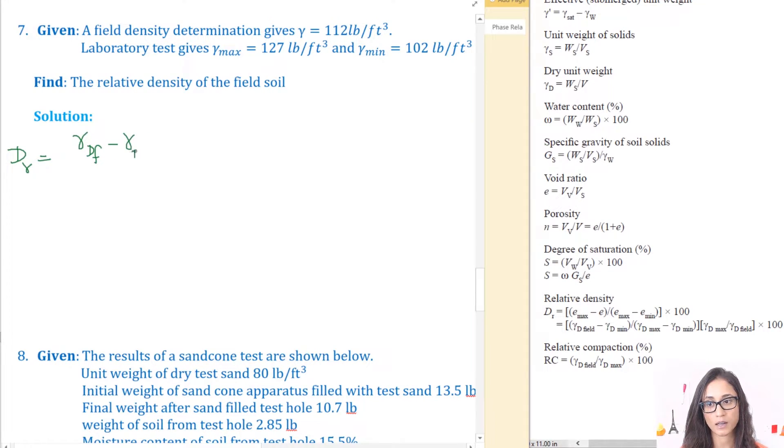Then I have minus gamma d min and then for min I'm just going to write m and we're going to divide that by gamma d max. Let's write it as max so we differentiate it from dm minus gamma d m.